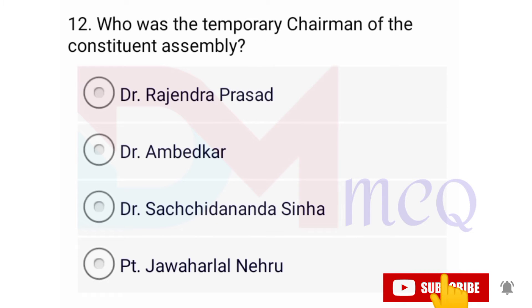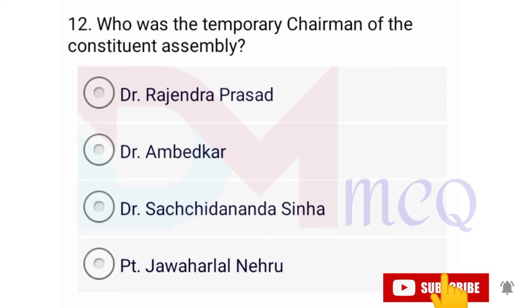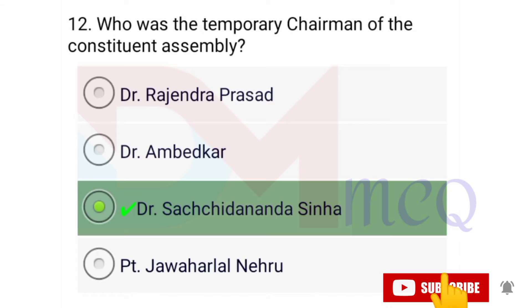Question number twelve: Who was the temporary chairman of the constituent assembly? Options are Dr. Rajendra Prasad, Dr. Ambedkar, Dr. Sachchidananda Sinha, Pandit Jawaharlal Nehru. Correct option is Dr. Sachchidananda Sinha.